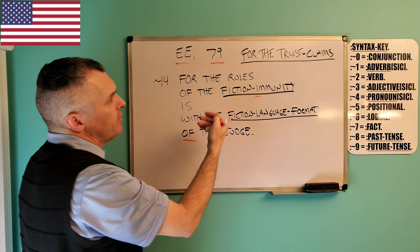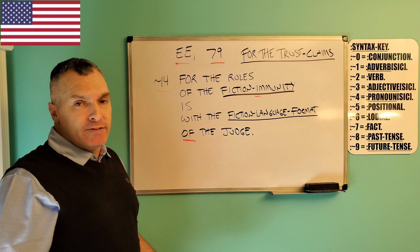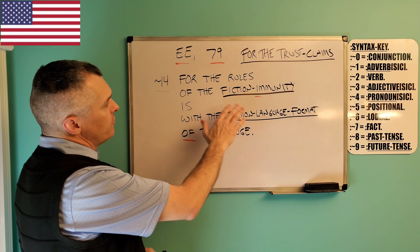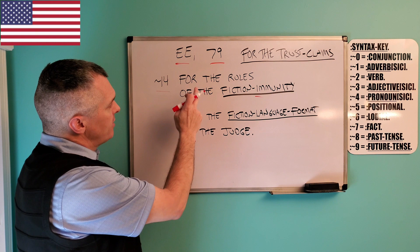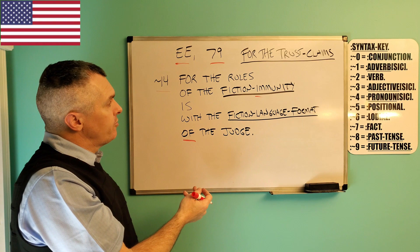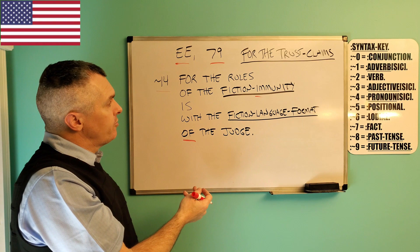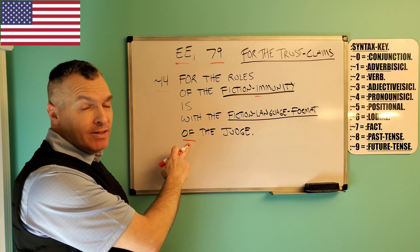And then we have this. Because these have not been positioned, this is fiction babble, and the rest of it is fiction babble. This number has not been positioned — same reason. Even though there's a tilde there, it has not been preceded by a positional phrase. And then we have 'for the rules of the fiction immunity' — vowel in front of two consonants, no contract word. And then we have cause, concern, verb, possessive, and then a concern ending it. So there's no authority in this sentence, and a correct sentence structure must start with a cause and end with an authority.